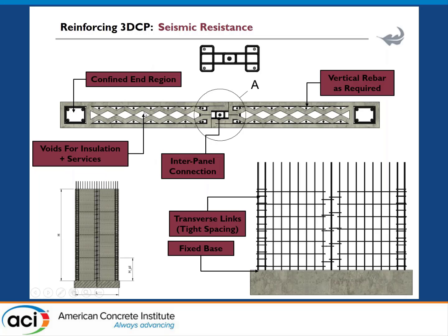The shear wall comprises about eight printed panels — limited by our printer's maximum height. The connections between panels are incorporated into the design. On the right you can see the vertical reinforcement and the horizontal reinforcement placed in situ while printing. All panels are linked together to form the wall. We expect it to perform well and should be able to report results in about a year or two.